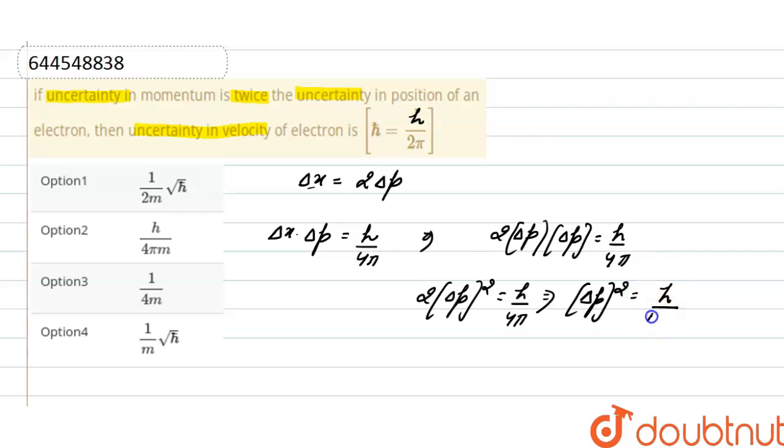Or delta p is equals to under root of h divided by 4 into 2 pi, or h divided by 2 pi, whole under root.